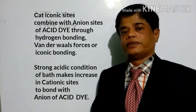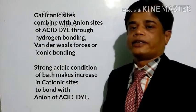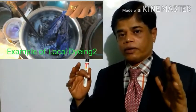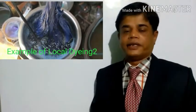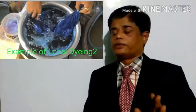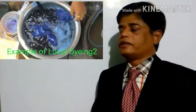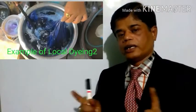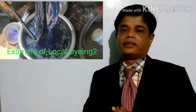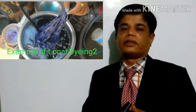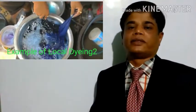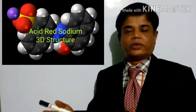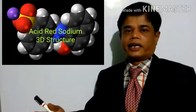Those cationic sites are attracted by the ionic sites of the acid dye. When the wool fiber or nylon is dyed with acid dye in acidic concentration, the attraction takes place — the anions from the dye go and place themselves on the cationic sites of the wool fiber structure by attracting the cations.